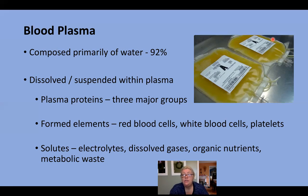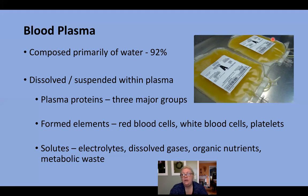Most oxygen travels in the blood attached to hemoglobin in red blood cells, but some is dissolved in plasma. For carbon dioxide, it's the opposite — some attaches to hemoglobin, but a majority travels dissolved in the plasma. Organic nutrients such as amino acids, carbohydrates, glucose, and lipids also travel in the plasma. Metabolic wastes produced by cells are taken up in the capillaries and carried in the plasma to be filtered out by the kidneys.